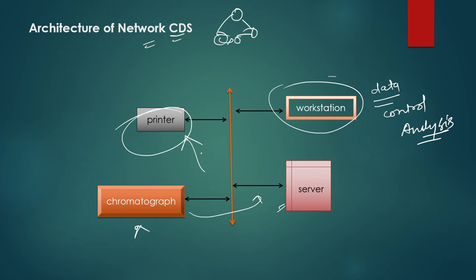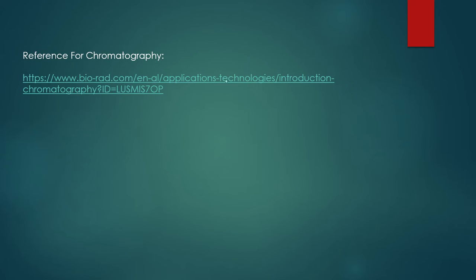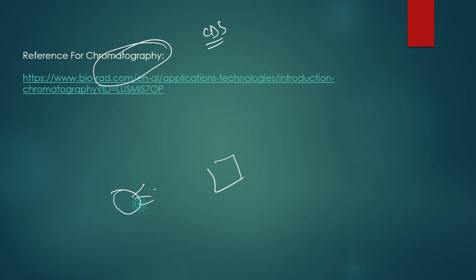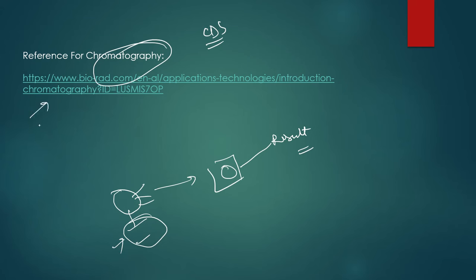In the network CDS architecture, the chromatograph separates sample components, an application requests service from a server computer, reports are generated and printed, and workstations handle data control and analysis. Chromatography has been covered — how CDS stores data, performs calculations, and presents results. Planar and column-based separation methods have also been included. Thank you.